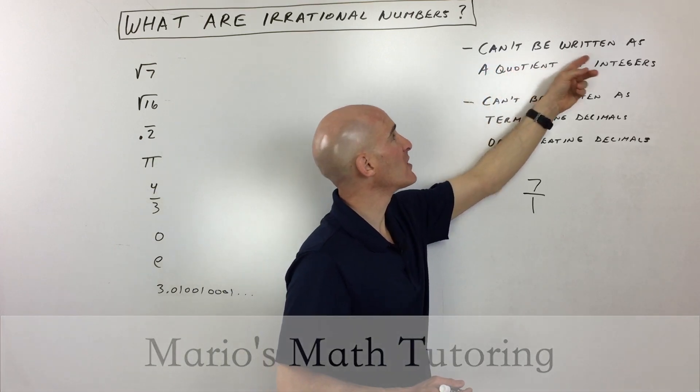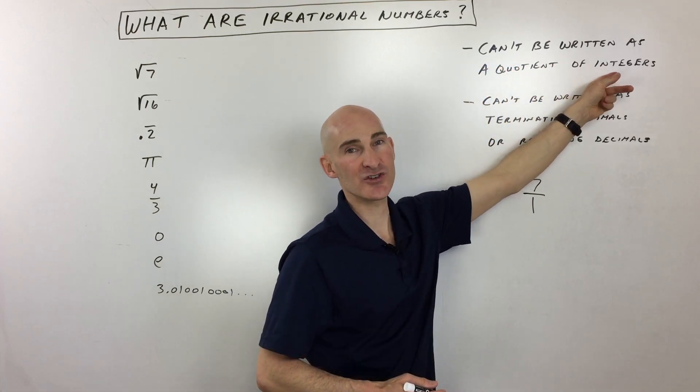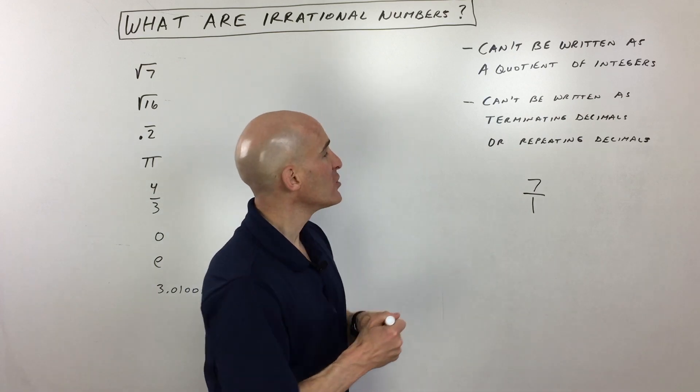First of all, an irrational number cannot be written as a quotient of integers. So what is an integer? Well, you know your integers as,